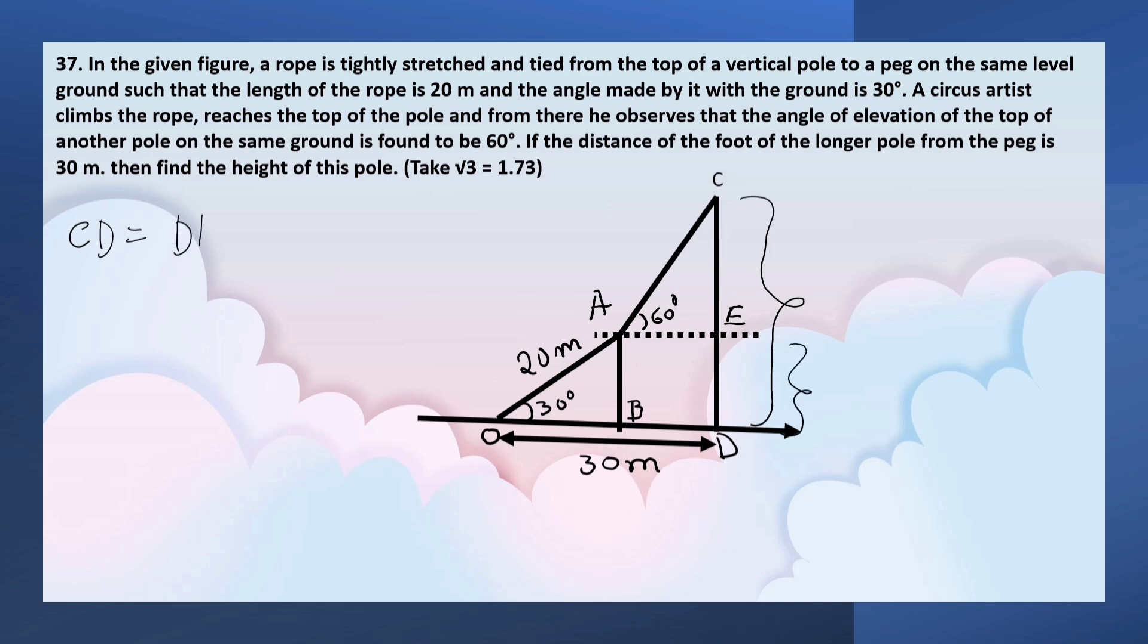CD equals DE plus EC. DE can be calculated by using AB since AB equals DE. AB can be calculated by using the sine ratio in triangle AOB.